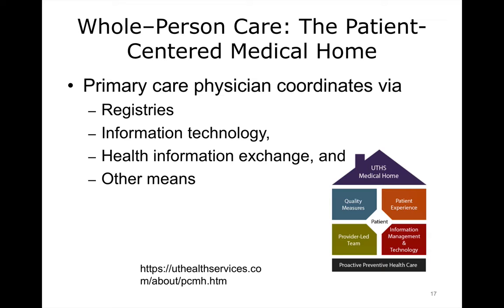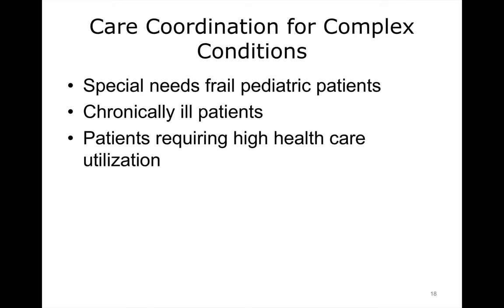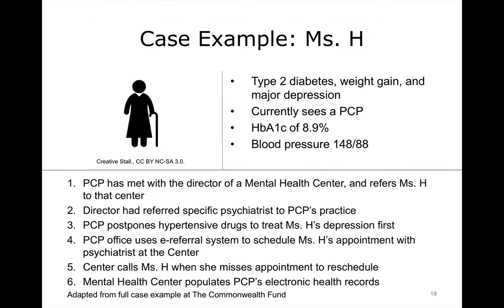This picture illustrates how the patient is at the center of the patient-centered medical home team and support efforts. Models for coordinating care for poorly controlled or complex conditions include special needs frail pediatric patients, chronically ill patients, and patients requiring high health care utilization. Older patients with chronic disease need particularly complex care coordination, as they often see many specialists and have lengthy medical histories.